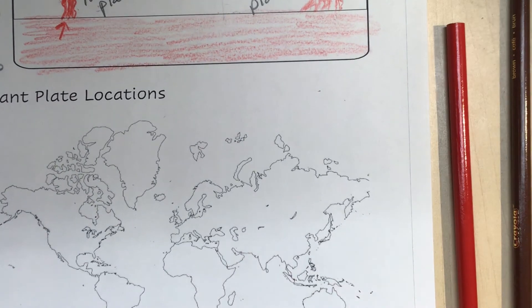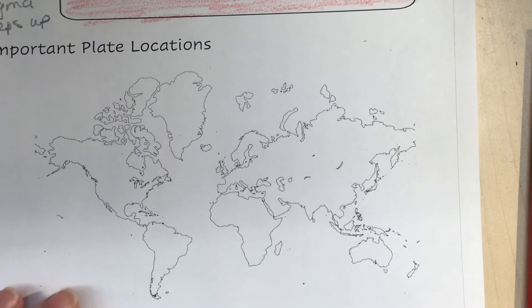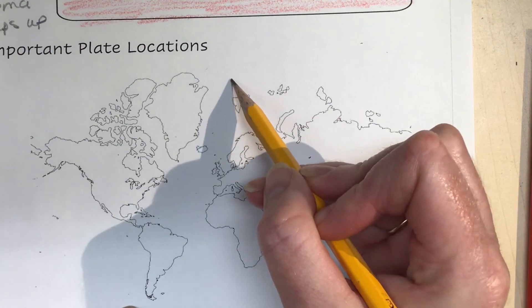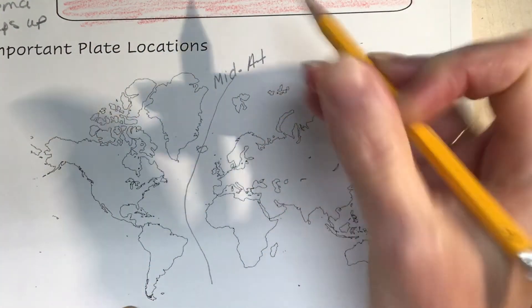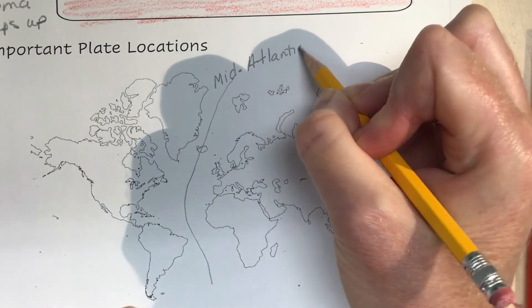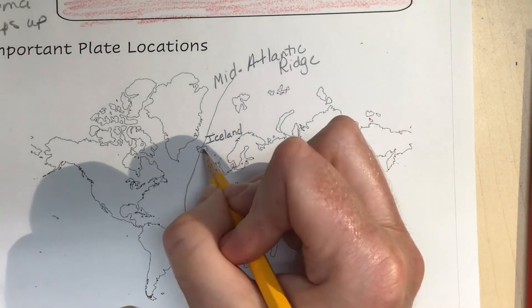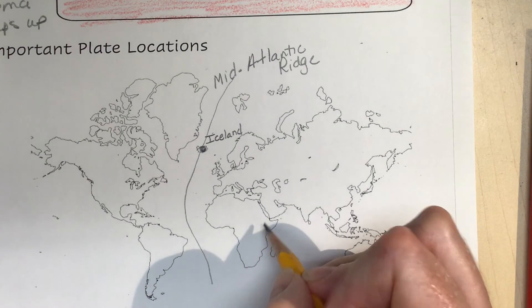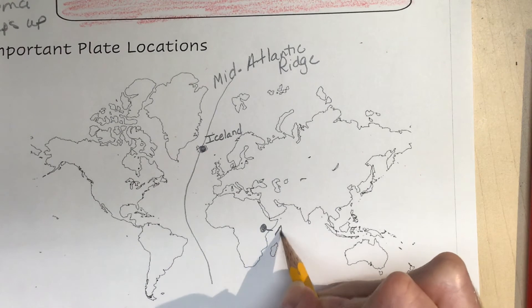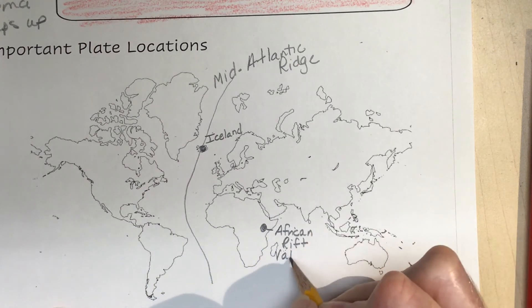For the AP test, you need to know some important plate locations because the test often has a map. You don't have to memorize all the plates, but you need to know a few key features. Down the middle of the Atlantic Ocean is the Mid-Atlantic Ridge. One place you can see it on land is Iceland. Another place you can see a divergent plate boundary is the African Rift Valley, where two plates are being pulled apart and create a big rift down the middle.